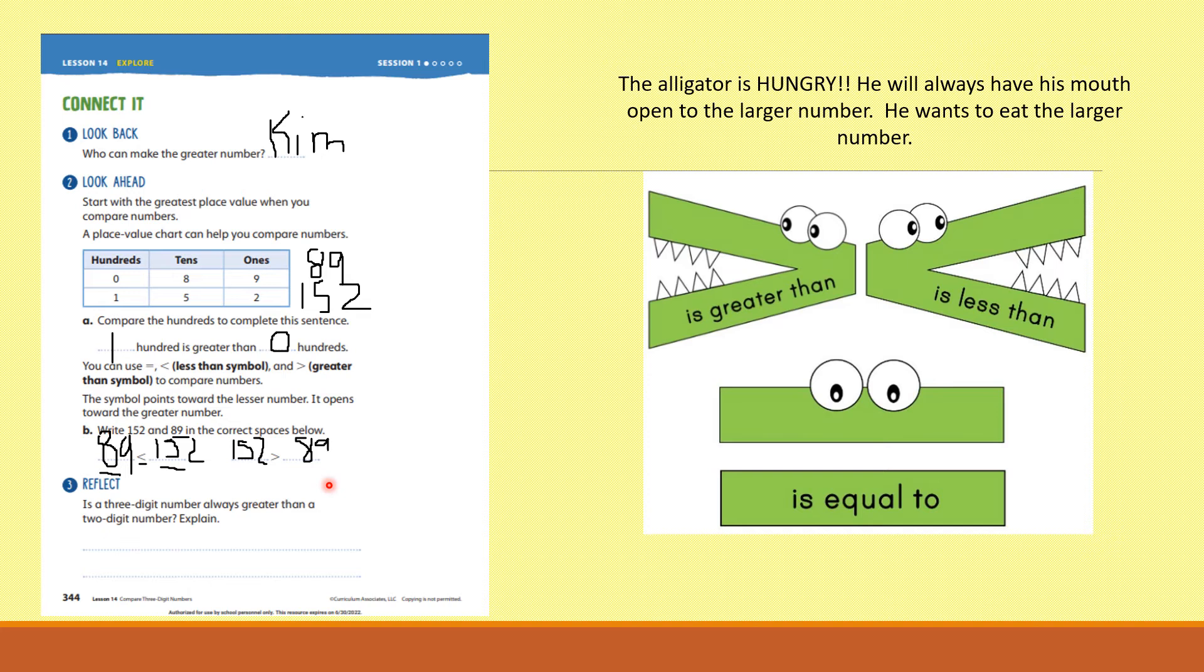Do you see that, boys and girls? Do you see why this is less than? Because the arrow, the opening to the arrow, is open to the bigger number. And the alligator is going to eat that big number. Think of it with teeth on it, and he's going to munch that big number up. Eighty-nine is less than one fifty-two, but one fifty-two is greater than eighty-nine.